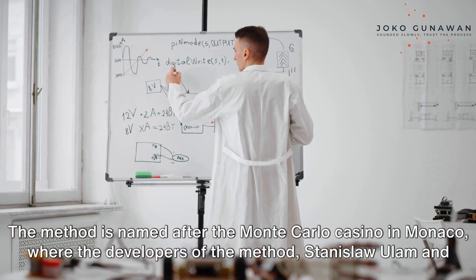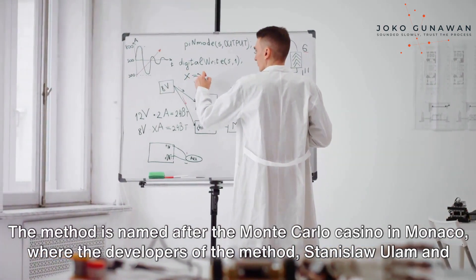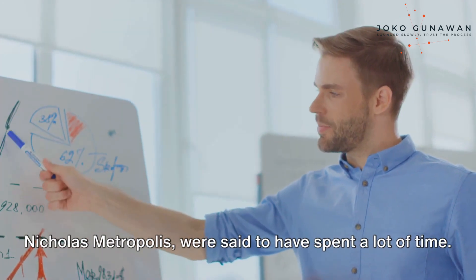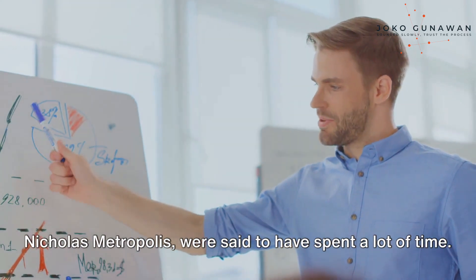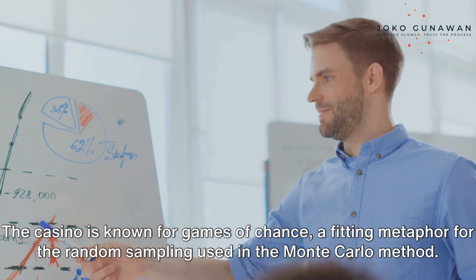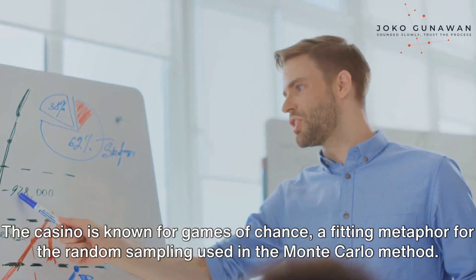The method is named after the Monte Carlo Casino in Monaco, where the developers of the method, Stanislaw Ulam and Nicholas Metropolis, were said to have spent a lot of time. The casino is known for games of chance, a fitting metaphor for the random sampling used in the Monte Carlo method.